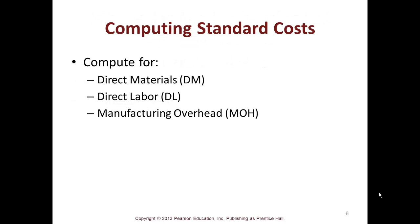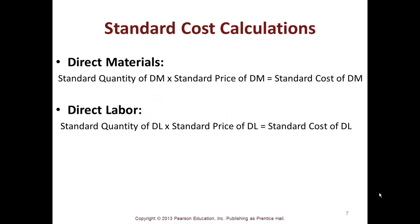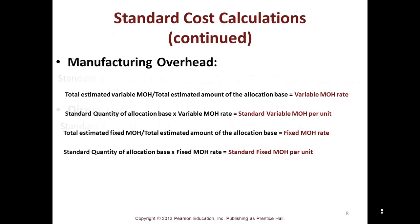You compute standard cost for direct materials, direct labor, and manufacturing overhead. Here's the first equation: direct materials standard cost equals standard quantity of direct material times standard price. For direct labor, it's the same structure: standard quantity of direct labor times standard price equals standard cost of direct labor. You might want to add these to your cheat sheet.